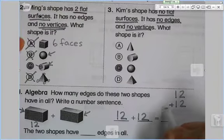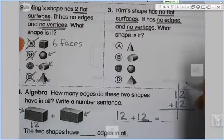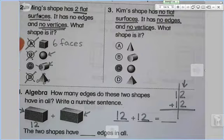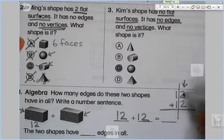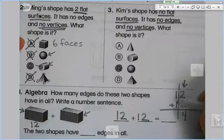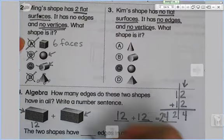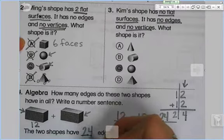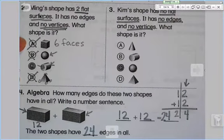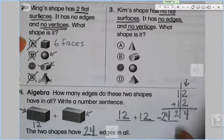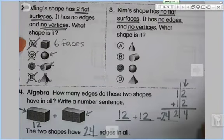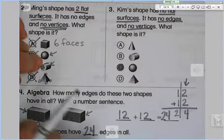Now we're going to go ahead and do our standard algorithm. Line our numbers up. What do we add first, everybody? Always the ones place. What's 2 plus 2? 4, and 1 plus 1 is 2. Your sum is 24. These two rectangular prisms have 24 edges in all.